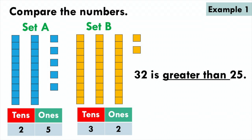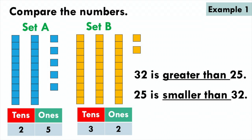I don't need to look at the ones yet because the tens already tell me that 32 is greater than 25. The tens also tell me that since 2 tens is smaller than 3 tens, 25 is smaller than 32.